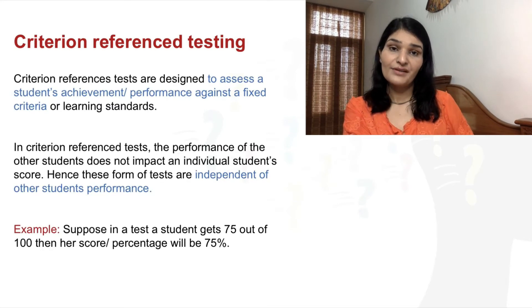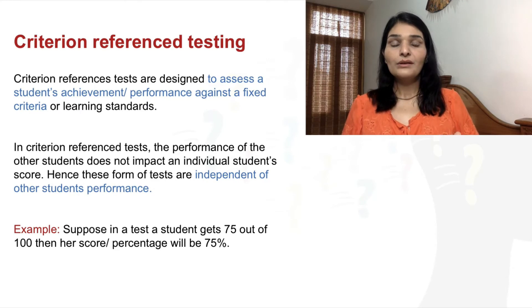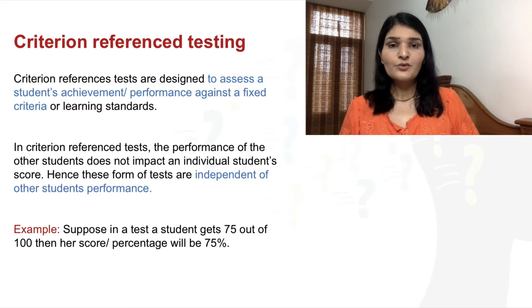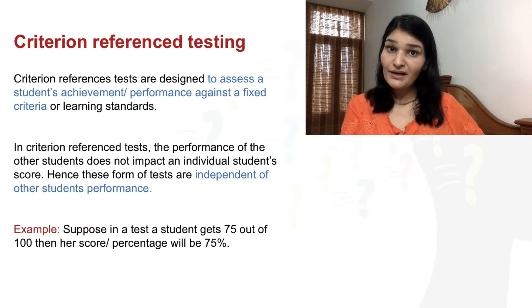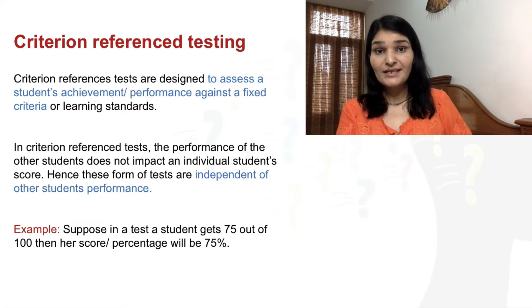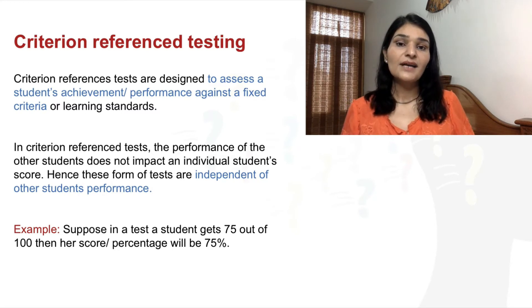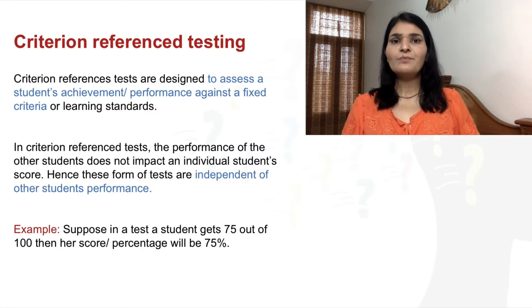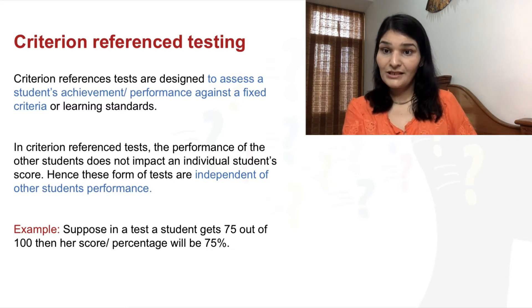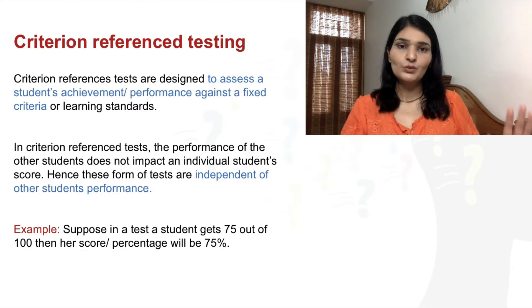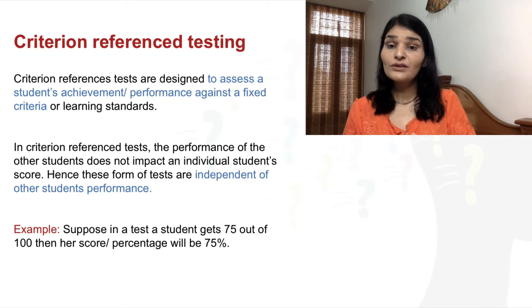Now let's come to criterion referenced testing. It's a type of evaluation where, before the course begins, teachers or professors set a fixed criteria — for example, that 35 or 40 percent marks are required to pass theory, and the practical must also be passed. The performance of other students does not impact your result. These tests are independent of other students' performance and are only concerned with the performance of that particular student.